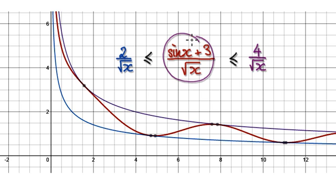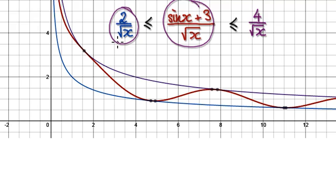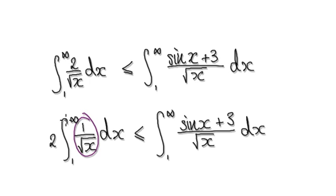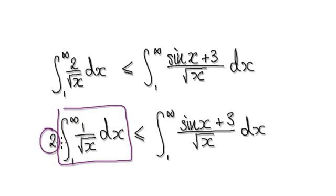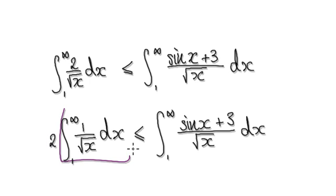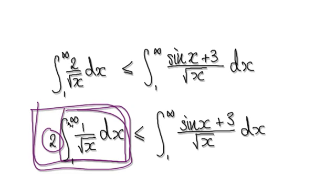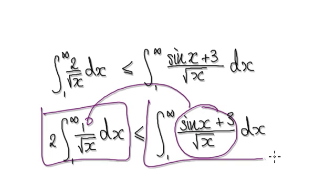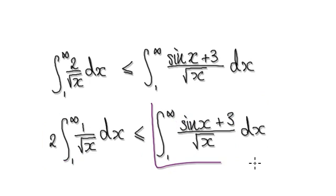We know that the original function is always less than or equal to the upper bound. So we should use the fact that the original function is always bigger than or equal to the lower bound. Because this is a constant, take it out — that gives you 2 times the integral of 1 over square root of x. We know that integral diverges, and multiplying by a constant 2 just makes it bigger and bigger — the whole thing still diverges. So since the lower bound diverges and the original function is always bigger than the lower bound, the original function has no choice but to also diverge.